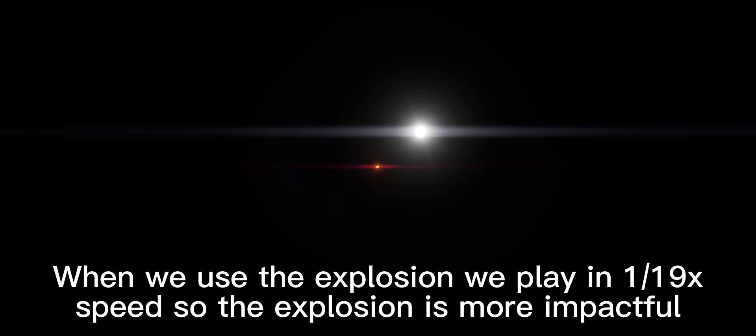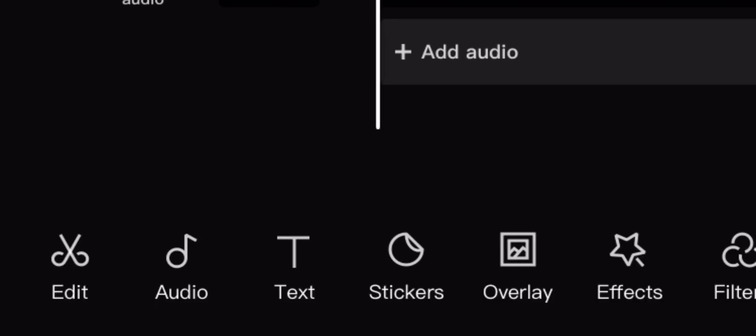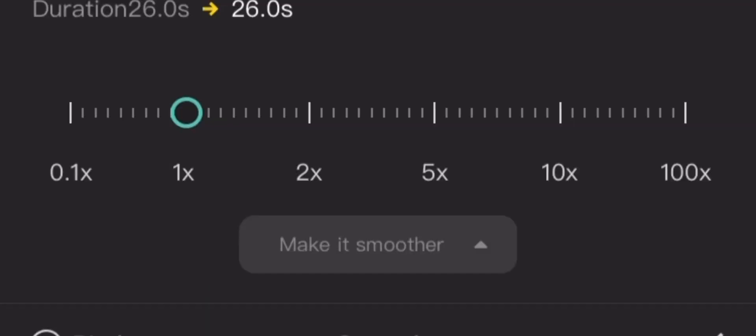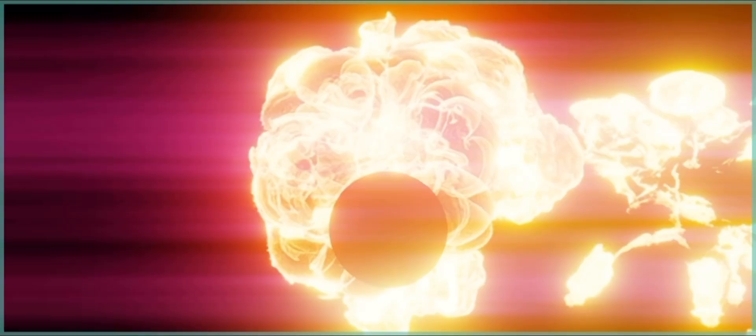Once we record the explosion the way we want it to be, we take it into the editor. In the editor, we're going to speed it up a little bit. This is optional, but you can then also add filters and effects to change the look of the explosion so it's more realistic.